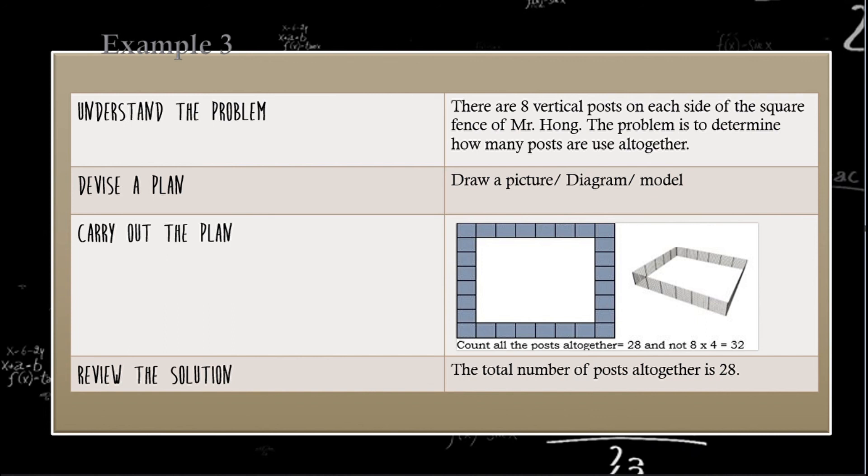And to carry out the plan, make an 8 box on each side, count them manually, then you will get the answer, which is 28. In fact, this problem is not an easy one because this is a tricky question that can make you think that all you need to do is multiply 8 to 4 because we have square. But 8 × 4 = 32. This is wrong because as you can see, this is counted twice. To review the solution, the total number of posts altogether is 28.